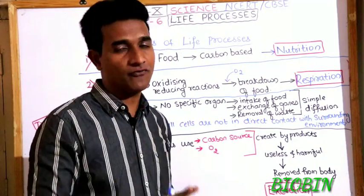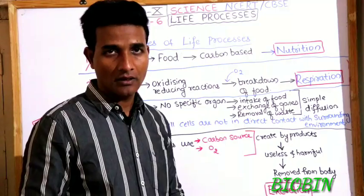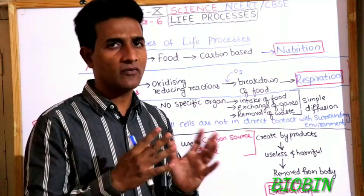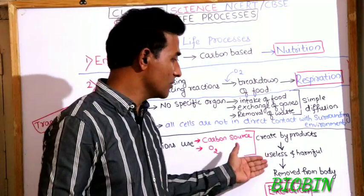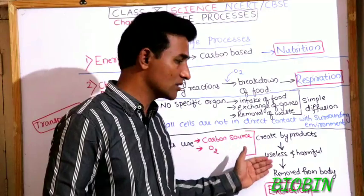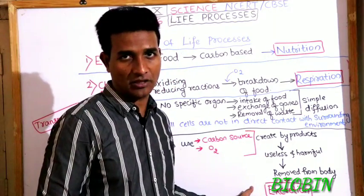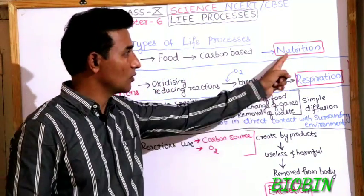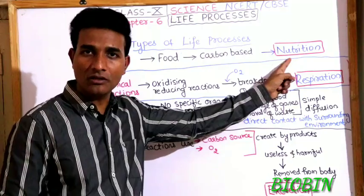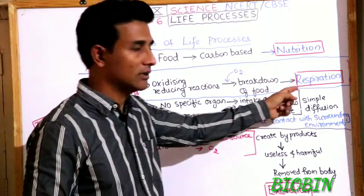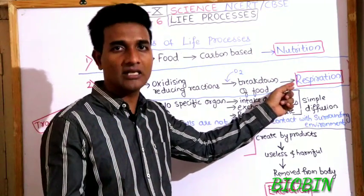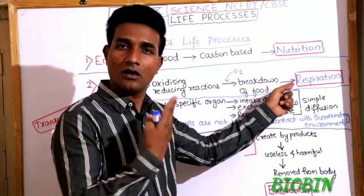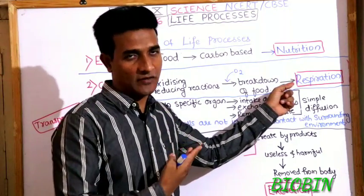Chemical reactions in the body use a carbon source and oxygen, and this creates byproducts which are waste — useless and harmful — and they must be removed from the body. This removal of waste is done by excretion. So we have four types of life processes: nutrition, respiration, transportation, and excretion.